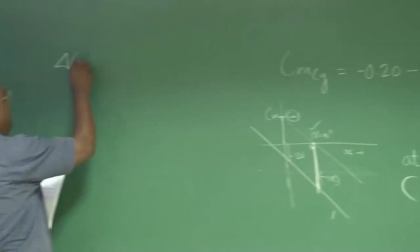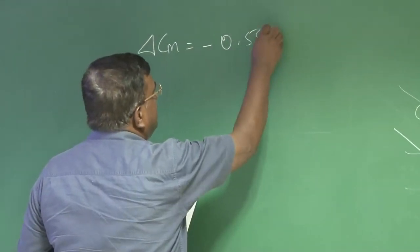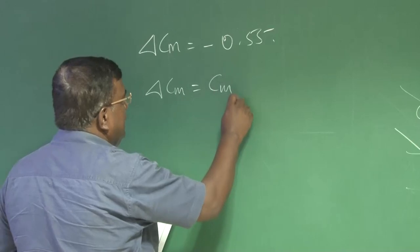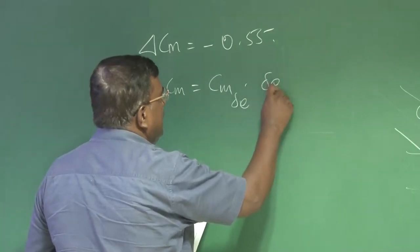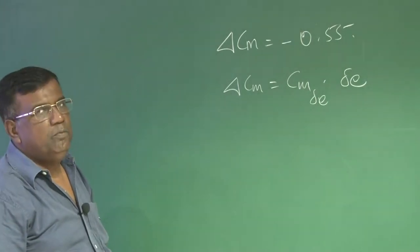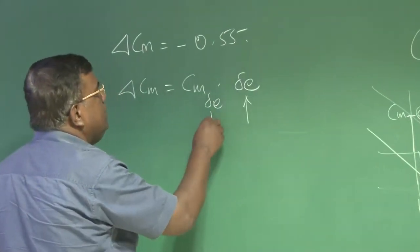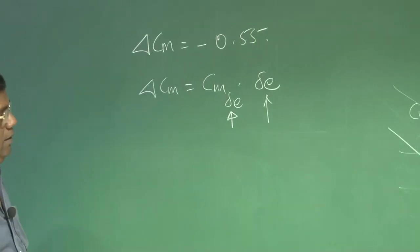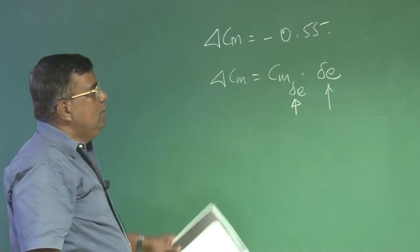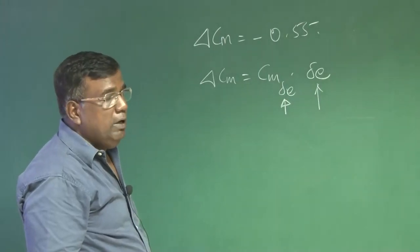That will decide what is the elevator size. This delta Cm which is minus 0.55 should be nullified. So I write delta Cm equals Cm_delta_E into delta E. I have to nullify this delta Cm by using elevator, and it is obvious that elevator should be up. Now the question is, how do I visualize what is delta E, what is Cm_delta_E as far as numbers are concerned? We realize delta Cm is minus 0.55 which has to be nullified. So I am asking, how much elevator and how much Cm_delta_E value the aircraft should generate?